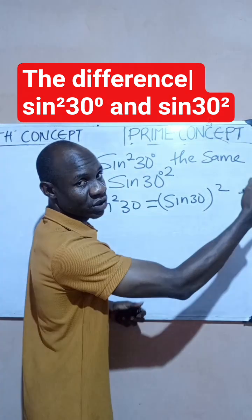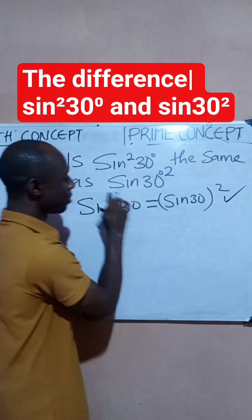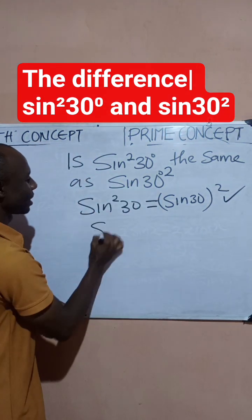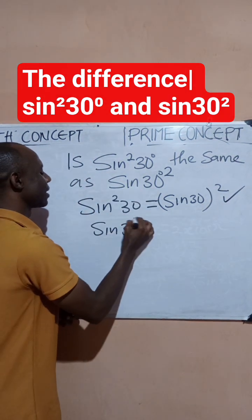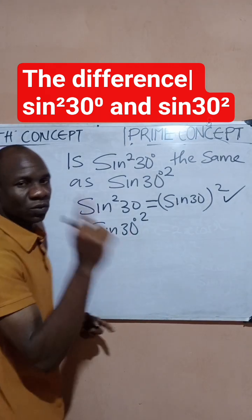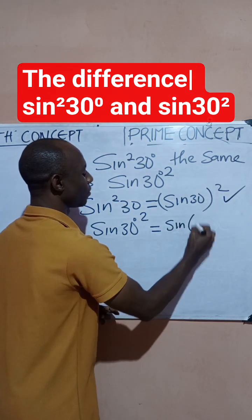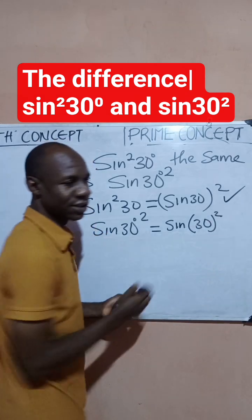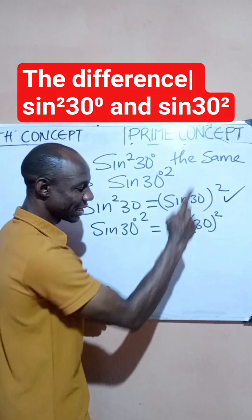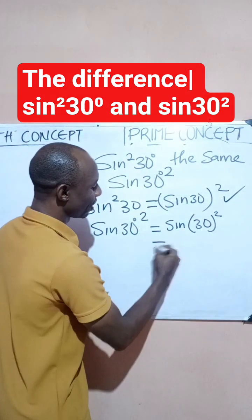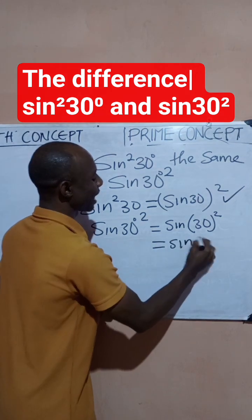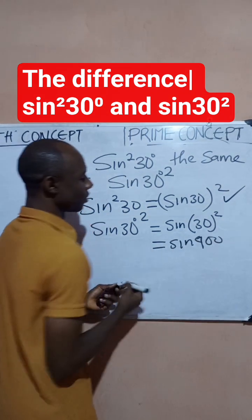sin 30 degrees all squared simply means you square your 30. So this can be written as sin(30²). You square your 30 first before you evaluate, so simply this is the same as sin 900. So you can see that the two are not the same.